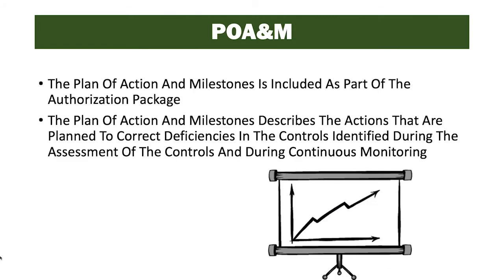The Plan of Action and Milestones is included as part of the authorization package. It describes the actions planned to correct deficiencies in controls identified during the assessment and during continuous monitoring. This is a living document — we continue to add to and update it. Not only deficiencies found during the assessment, but also those identified later during the continuous monitoring phase, are added to the POAM.